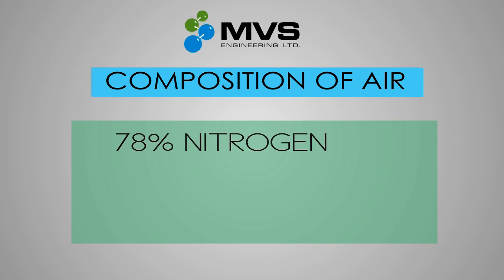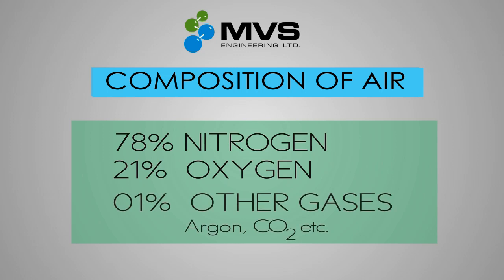Let us see how nitrogen is produced using an on-site nitrogen generator. The atmospheric air that you and I breathe comprises of around 78% nitrogen, around 21% oxygen, and the balanced gases such as argon, CO2, etc.